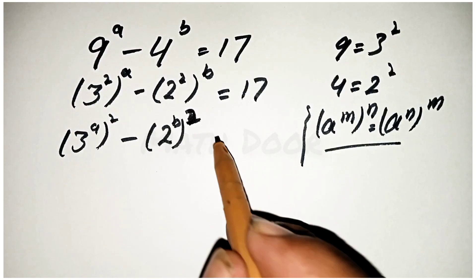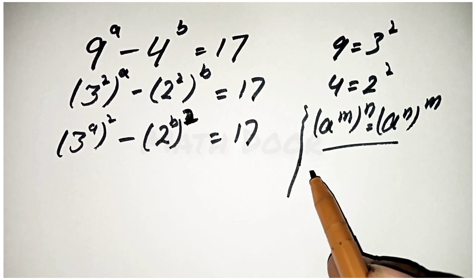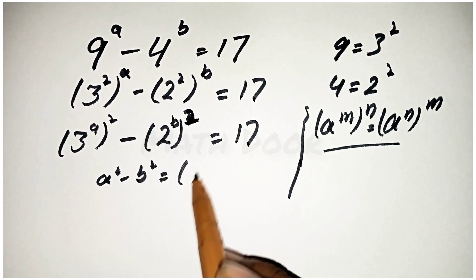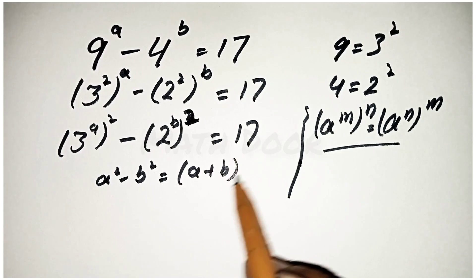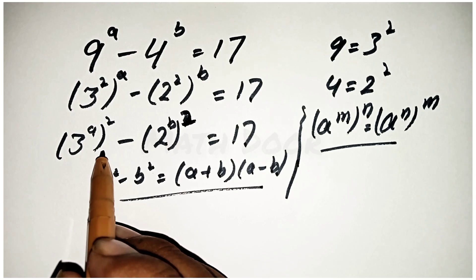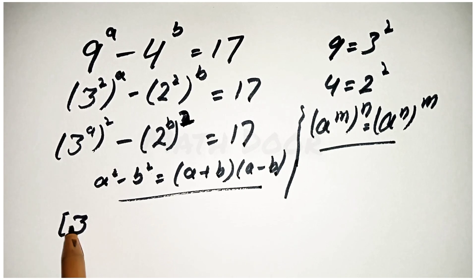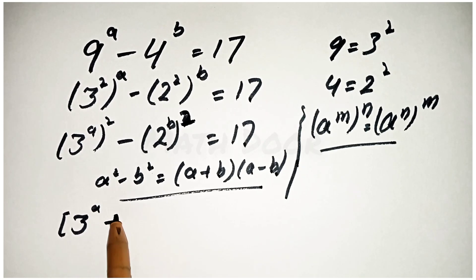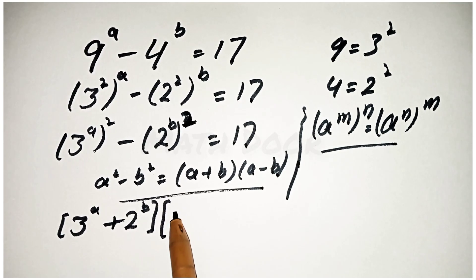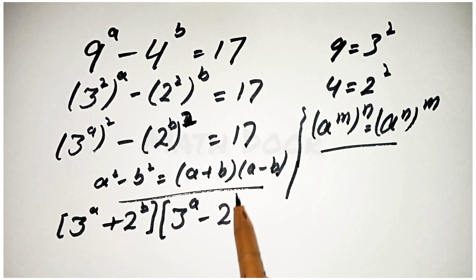We have another formula: a squared minus b squared is equal to a plus b times a minus b. We apply this formula to the question, so we can write brackets 3 power a plus 2 power b, brackets 3 power a minus 2 power b, is equal to 17.